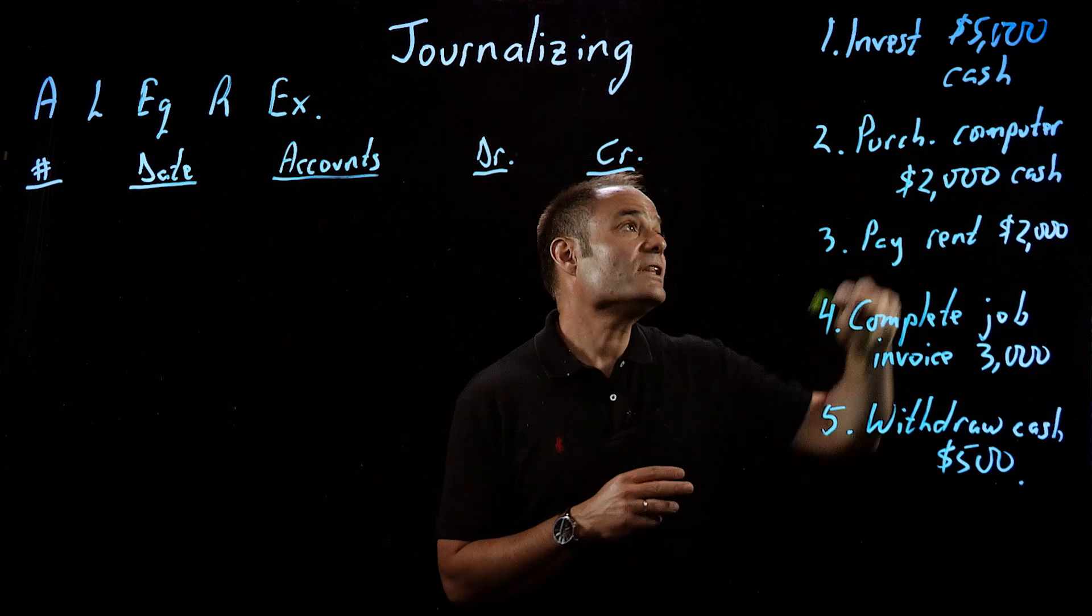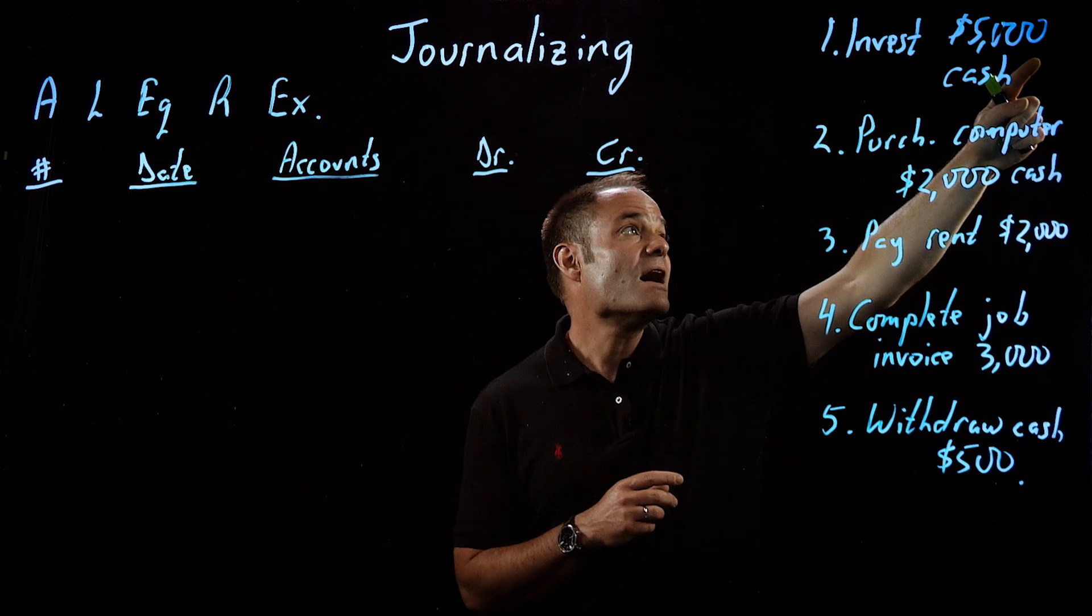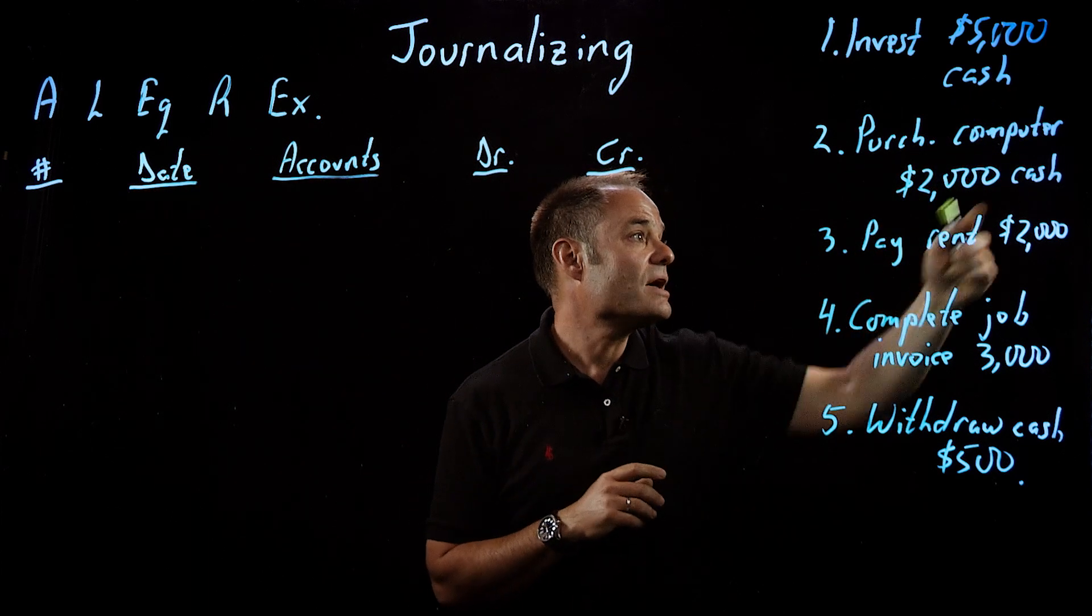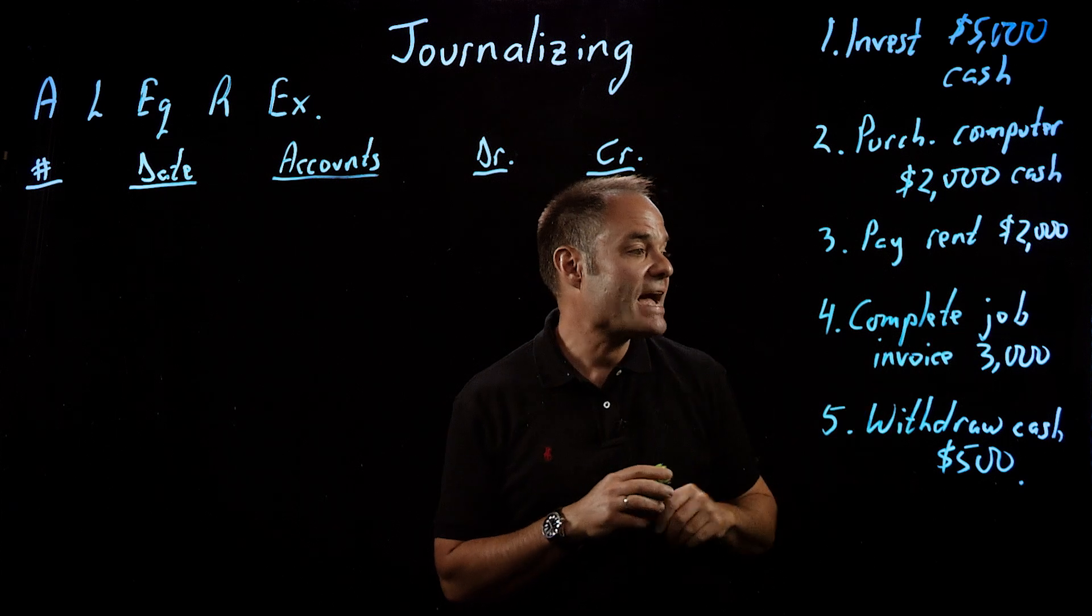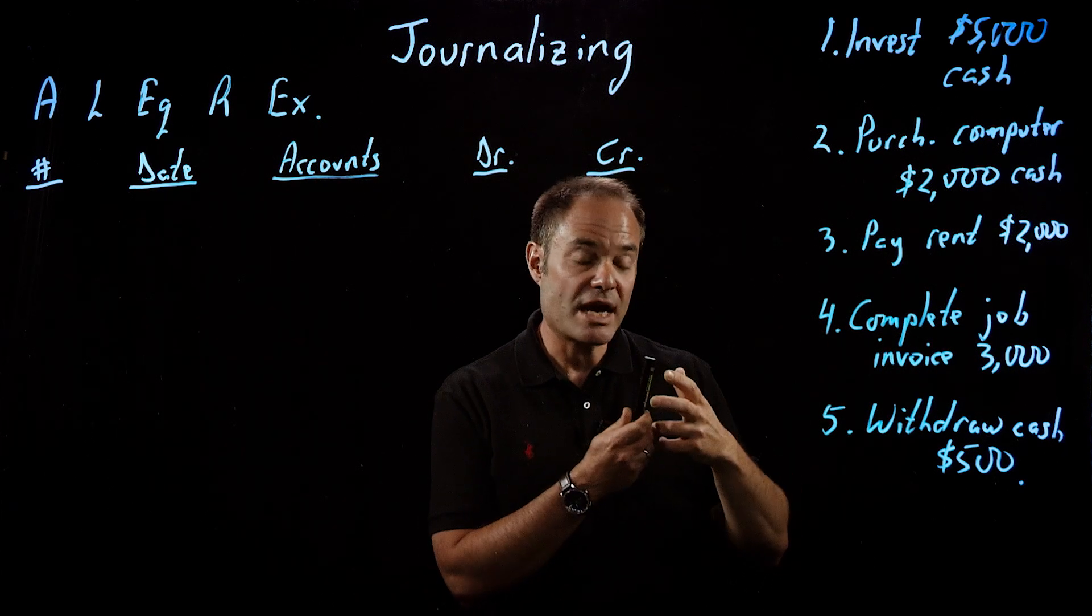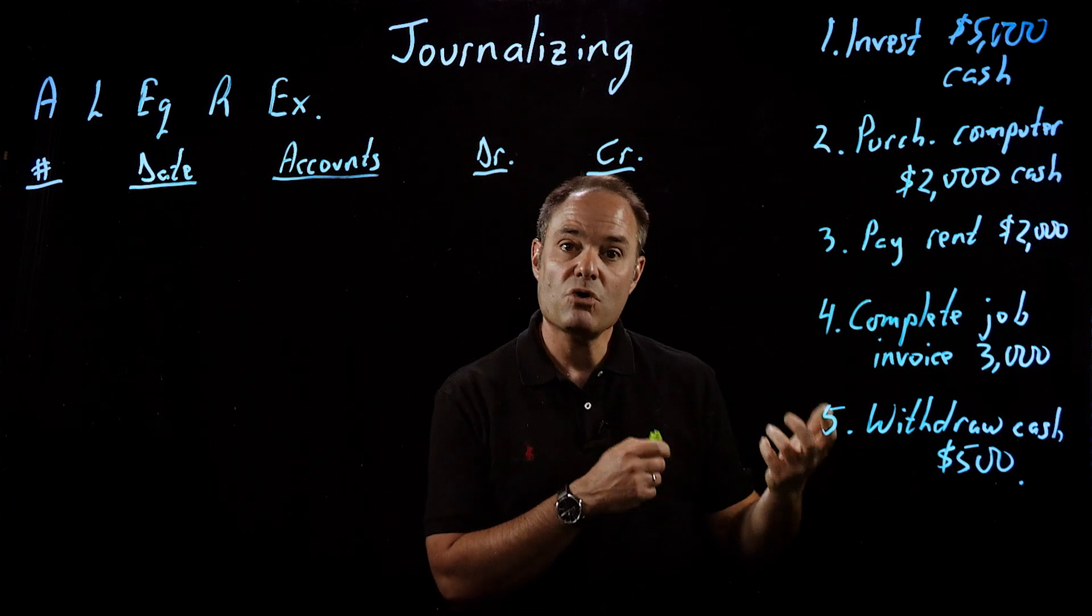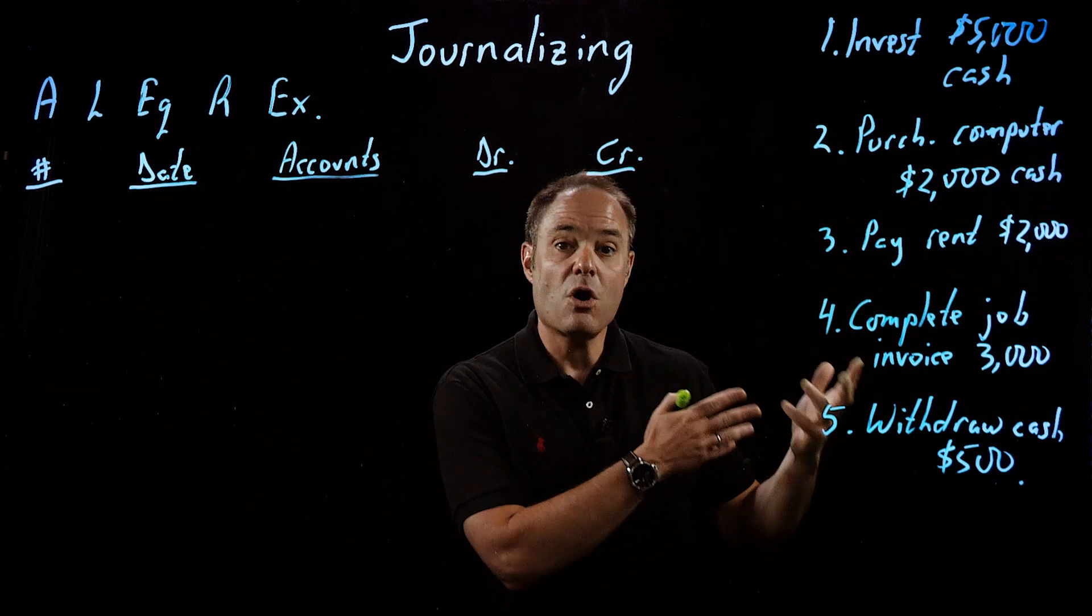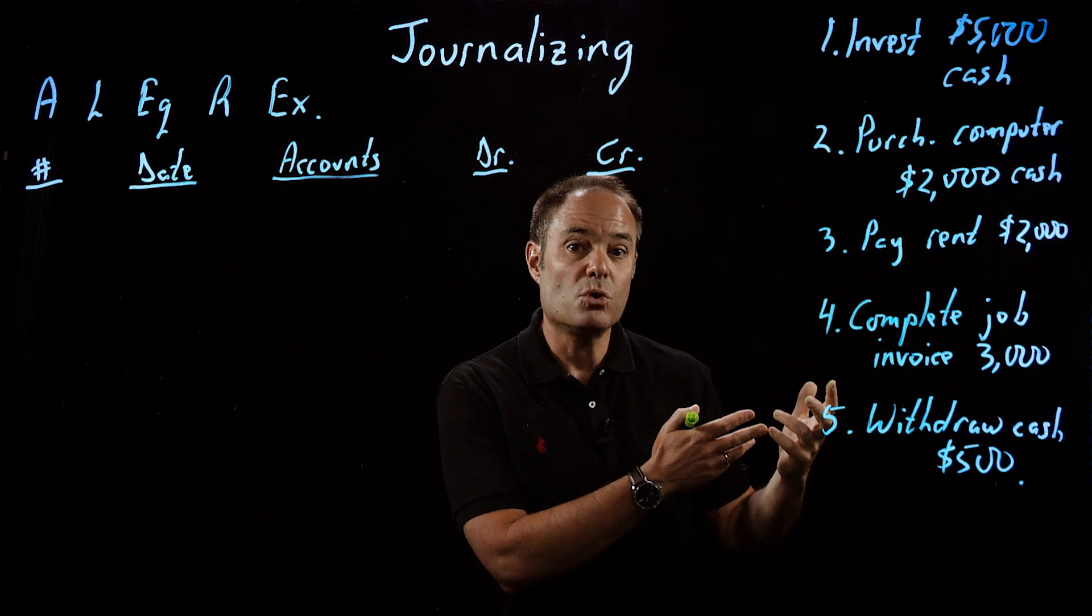We can go through these very quickly. We can see that this one involves receiving cash, so an asset's going to change, therefore it's a transaction. Payment of cash, payment of cash, completing a job is revenue and that's going to change equity, and finally withdrawal, that involves both cash and equity. All of these we've determined are transactions and they need to be recorded.